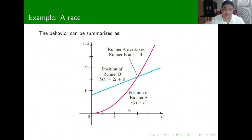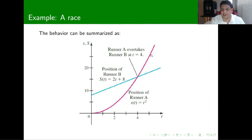Comparing the two functions on a graph — this is Runner A and this is Runner B — at t equals 4 they will be at the same position, which is a distance of 16. After that, Runner A with the quadratic displacement will go much faster than Runner B. So although Runner A was initially behind, after 4 seconds Runner A overtakes Runner B.